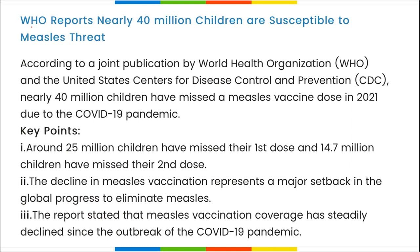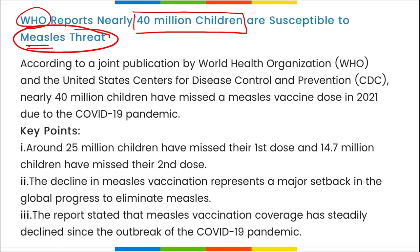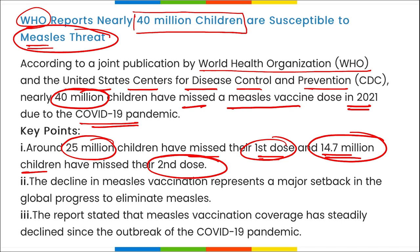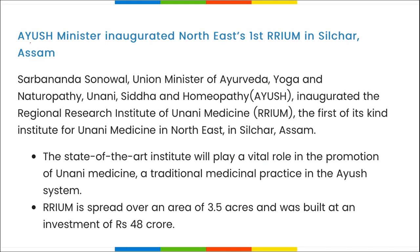WHO reported that nearly 40 million children are susceptible to measles threat. According to data from WHO and the US Centers for Disease Control and Prevention, approximately 40 million children missed a measles vaccine dose in 2021 due to COVID-19 — around 25 million missed their first dose and 14.7 million missed their second dose.